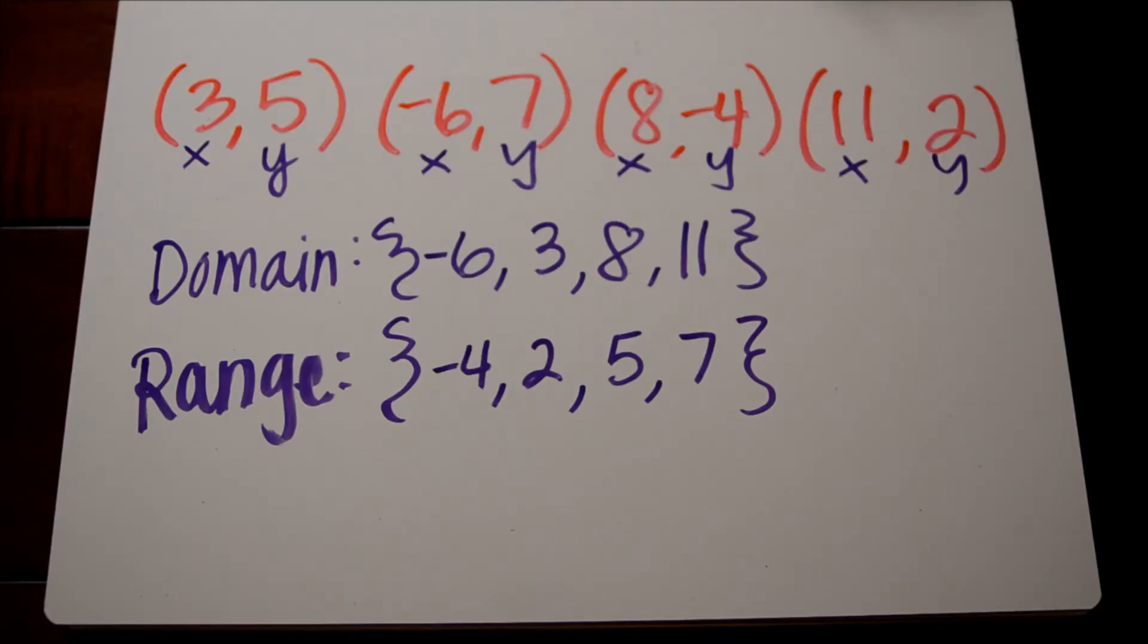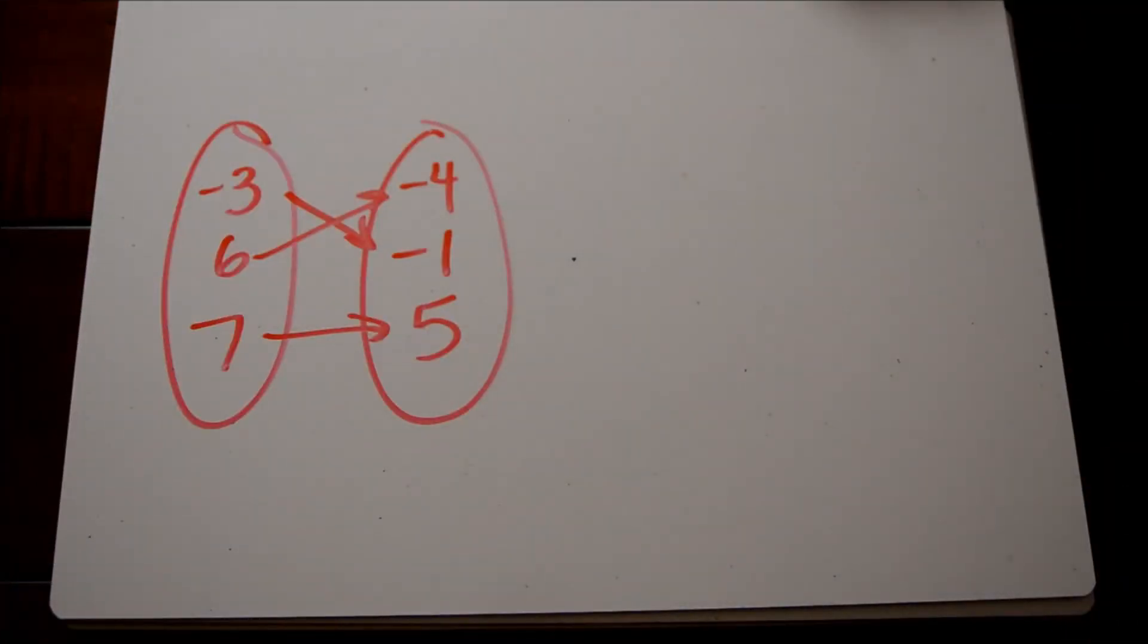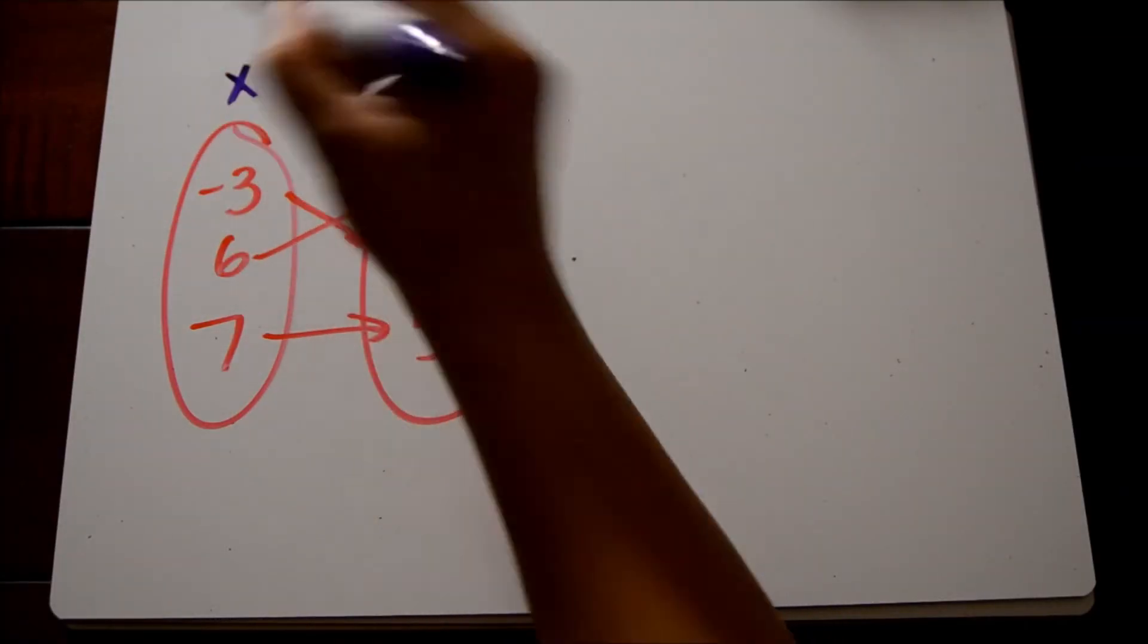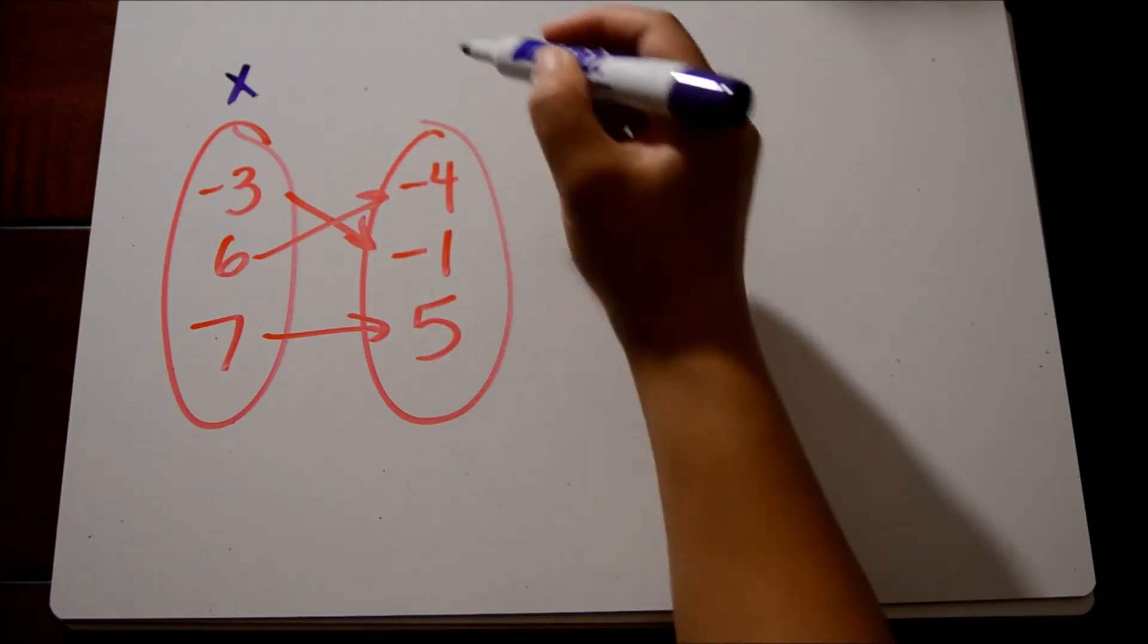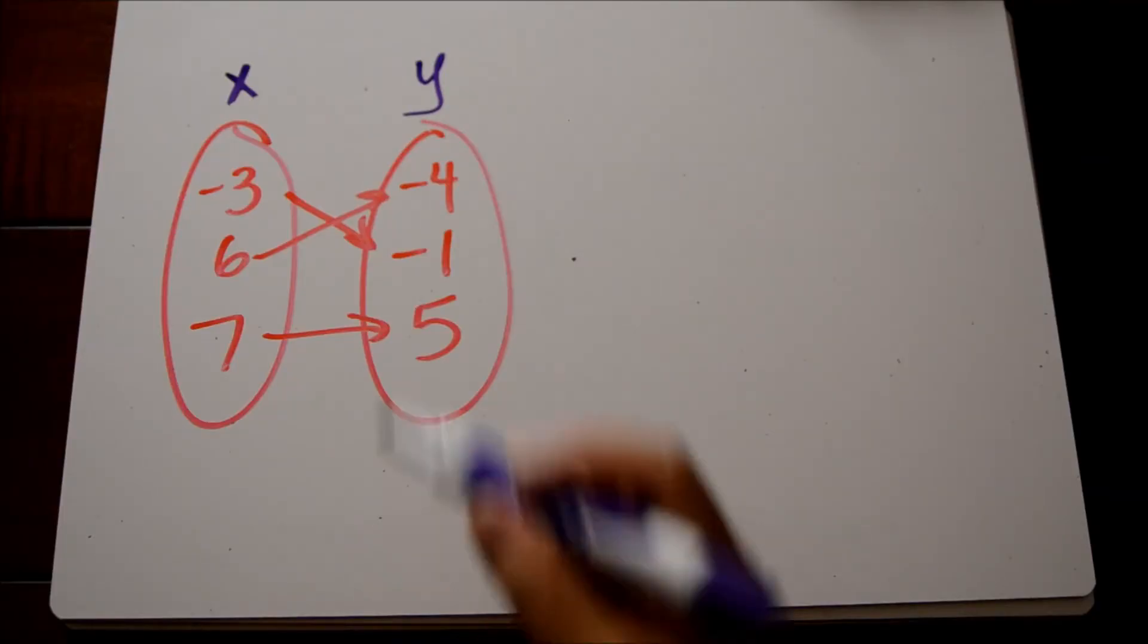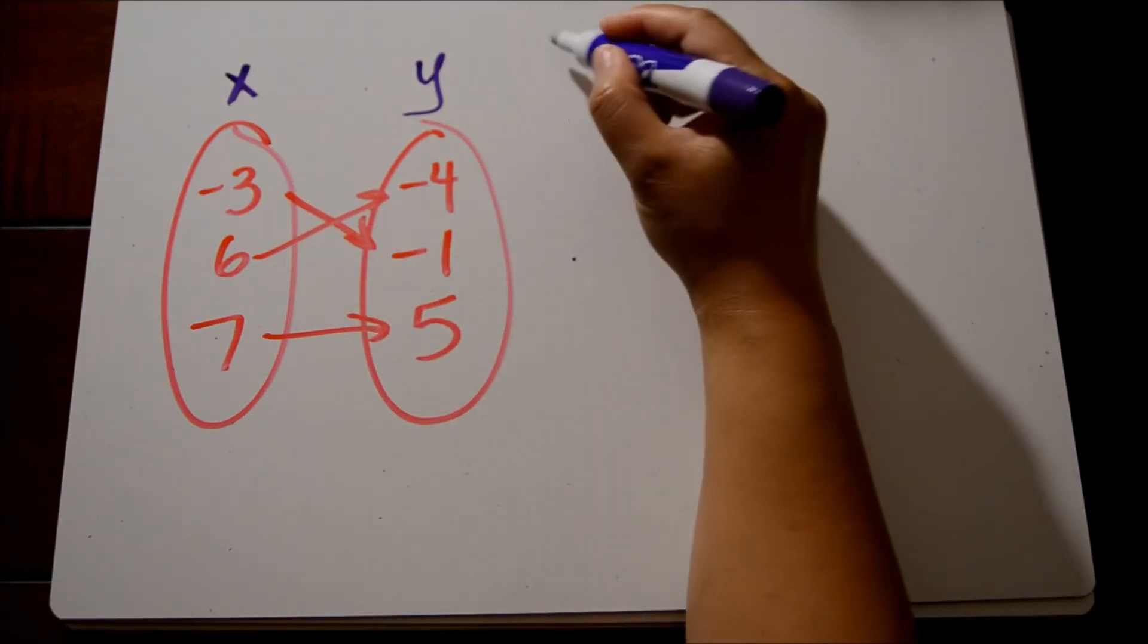Let's take a look at another example. Our next example is going to be a mapping diagram. If you're not familiar with mapping diagrams, the first group represents our x values. Our second group represents our y values. And this is just another way of showing a relationship between ordered pairs. So here this negative 3 is paired with negative 1, that's why the arrow is drawn there.